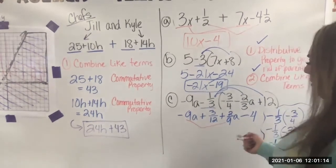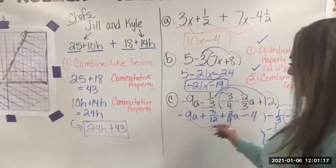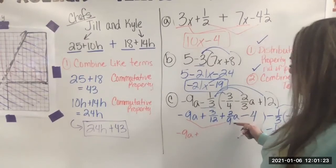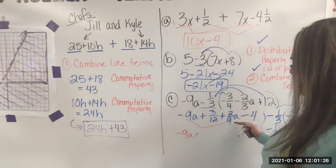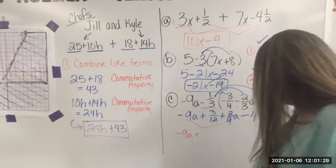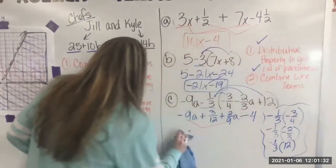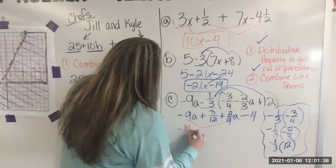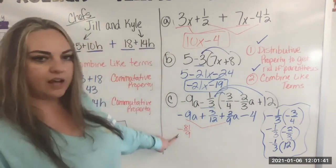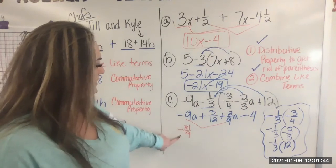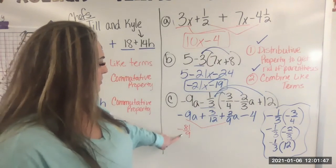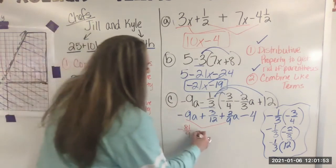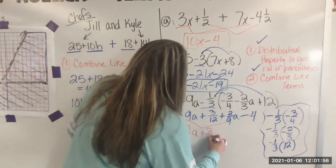So negative nine plus two ninths. Well, when we're adding and we don't have common denominators, we can rewrite them to have them. So we actually have negative nine A plus, we want to make this a common denominator. So I'm thinking, how can I actually, I want to do this one. This would be negative 81 ninths, right? Because that would give me negative nine. I'm rewriting this so that has a denominator of nine. Basically, I have to multiply everything by nine because the denominator is a one. So I need it to be a nine multiplied by nine plus two ninths A.